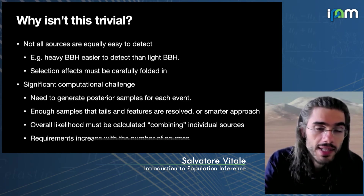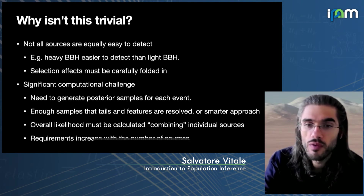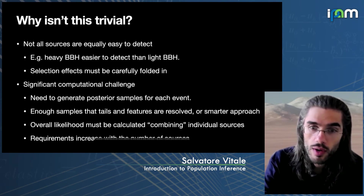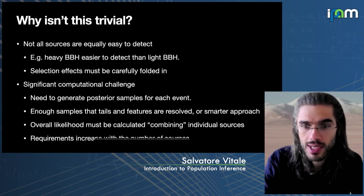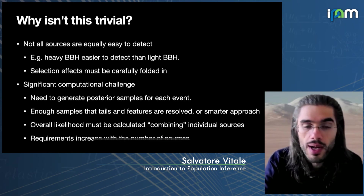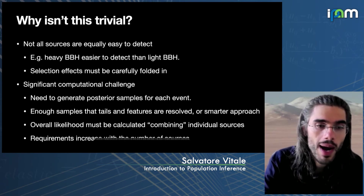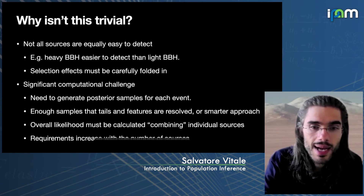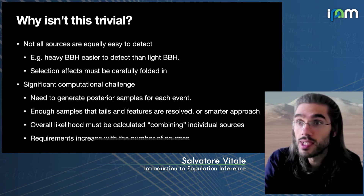We are also facing significant computational challenges for various reasons. First, we need to generate posterior samples for the posterior distribution of individual events, and these need to be done carefully. We need enough samples that the tails of the distributions and where the features are fully resolved, or we need some smarter approach. Once you do this for all of your significant events, you have to combine them together to calculate an overall likelihood. The computational requirements increase with the number of sources used for inference.